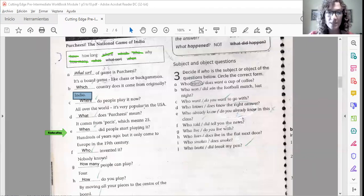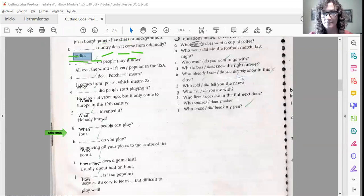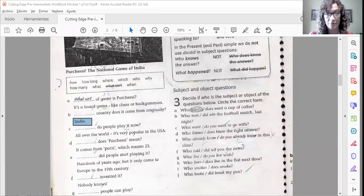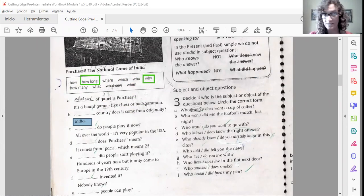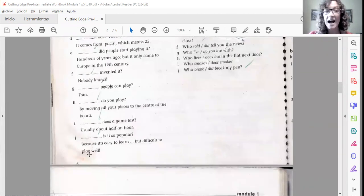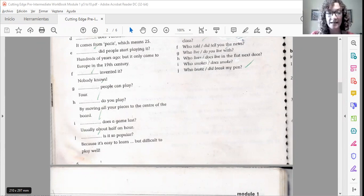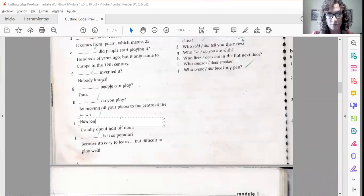So we've got the two last ones. Remember, we have a why and how long. These are the only question words missing. Letter I. How long does a game last? Usually about half an hour. In this case, it's telling us cuánto dura, cuánto tiempo. So in this case, how long would be suitable.